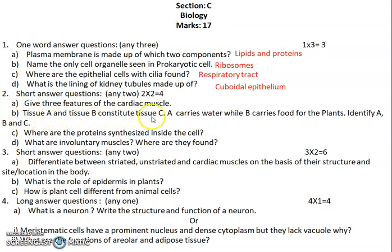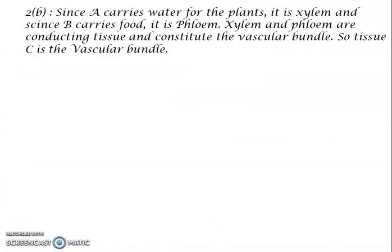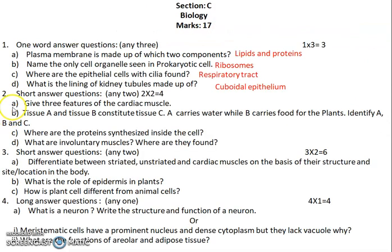Question 2b: tissue A and tissue B constitute tissue C. A carries water while B carries food for plants — identify A, B, and C. Since A carries water, A is xylem. Since B carries food, B is phloem. Both xylem and phloem constitute the vascular bundle. They are complex permanent tissues, also called conducting tissues. So A is xylem, B is phloem, and C is the vascular bundle.